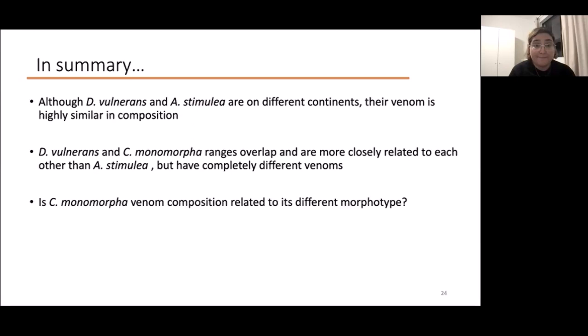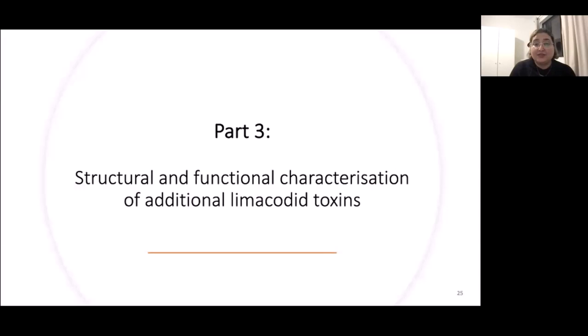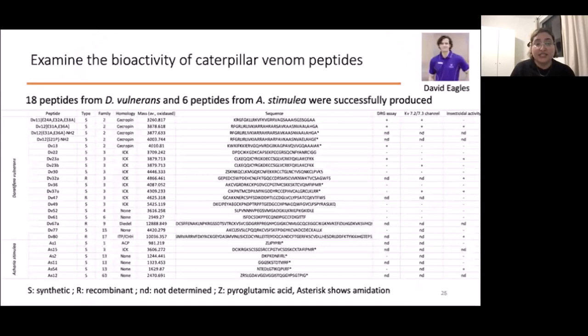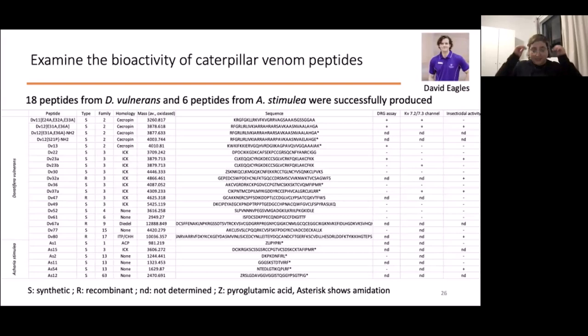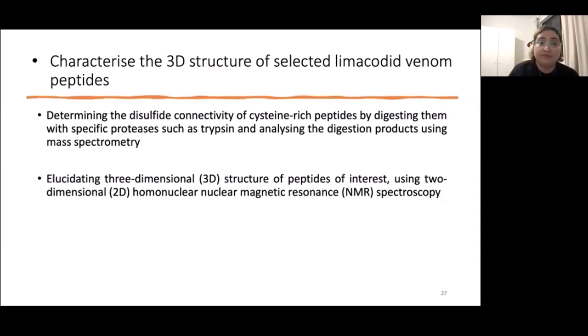Also, what I'm doing is to characterize the structure and function of additional toxins. This is just a big table to show that I'm making a library of peptides in the lab, both recombinantly and synthetically. After I've made them, I'm going to screen them against a range of ion channels and insecticidal assays to potentially find something cool. After that, maybe characterize the 3D structure of them using NMR, so watch this space. I might come up with something cool.